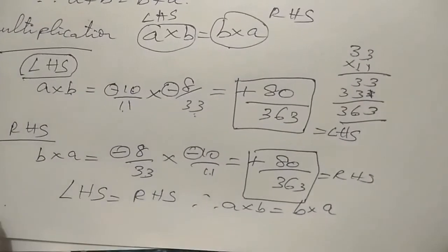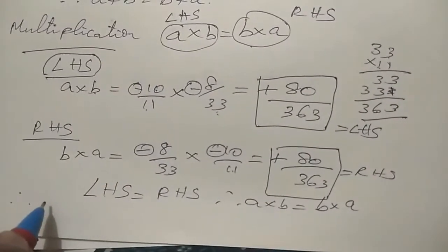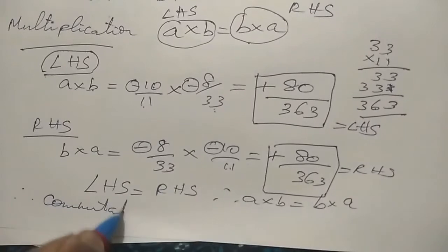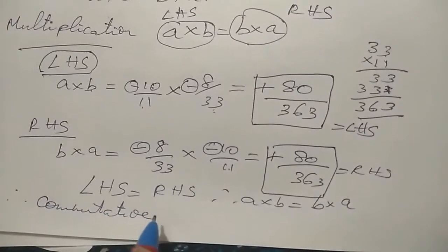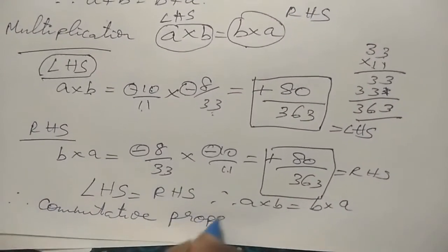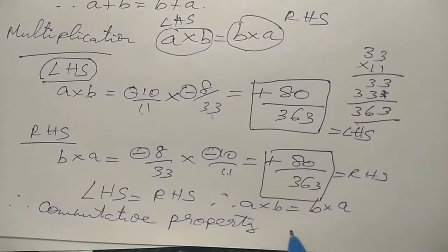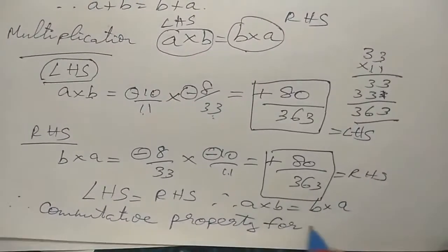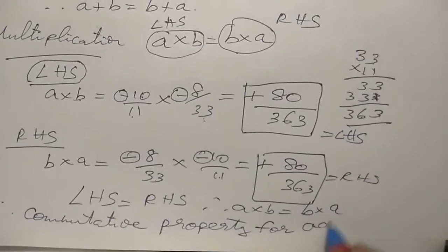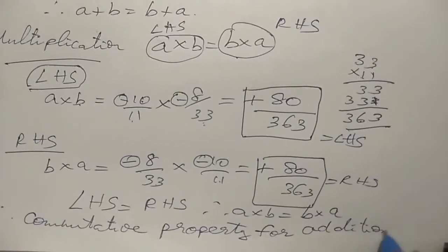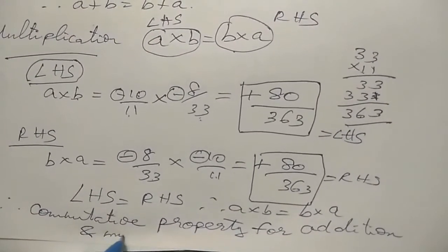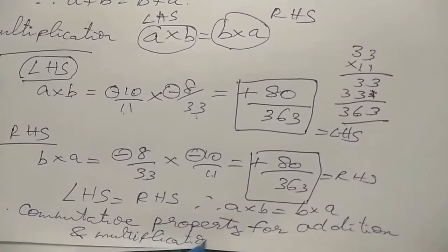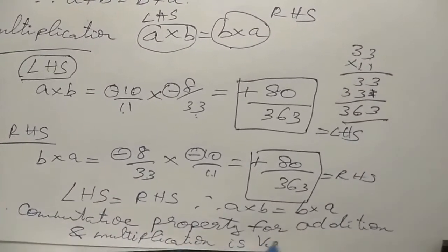Therefore, a into b is equal to b into a. The commutative property for addition and multiplication is verified.